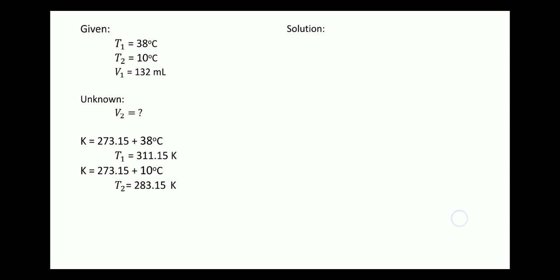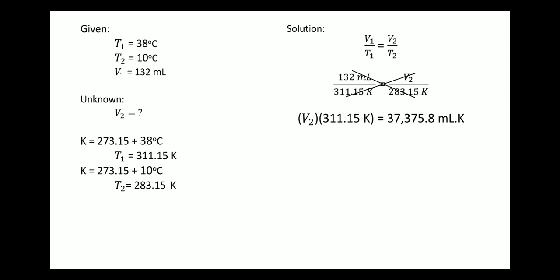After that, we can now solve for V2. Writing the formula and substituting the values: 132 mL over 311.15 Kelvin is equal to V2 over 283.15 Kelvin. Cross multiply. Multiplying 132 times 283.15, the answer is 37,375.8 mL·Kelvin.